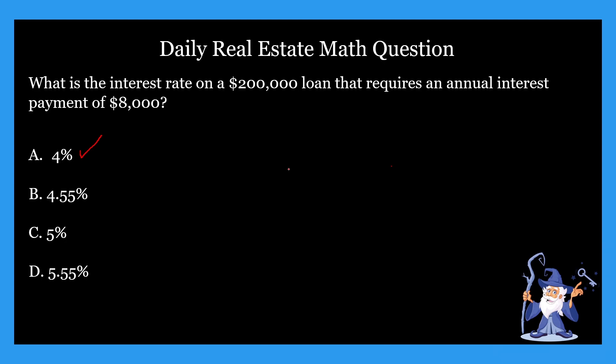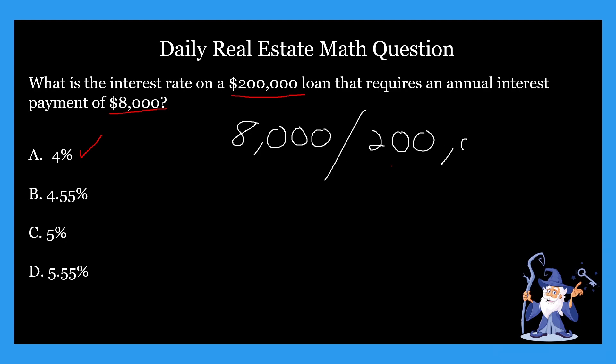So how did we do this? Well, this problem is just like the one yesterday. Basically what you have to do is figure out what the question is asking — it is looking at the interest rate. We're going to be using $8,000 and $200,000, and applying our formula: annual interest divided by the loan amount equals the interest rate. So when we plug that into our formula, it's $8,000 divided by $200,000, which gives us 4%, or 0.04.